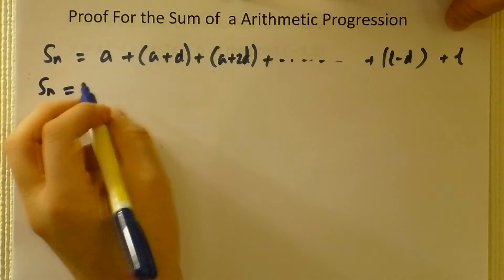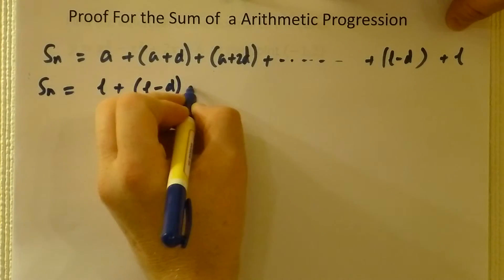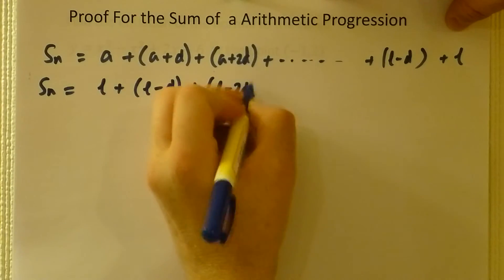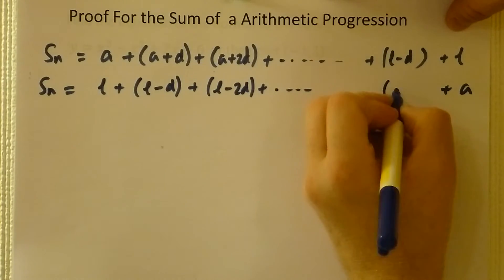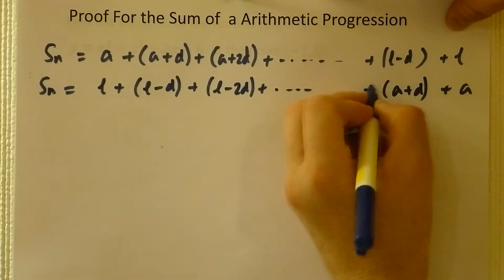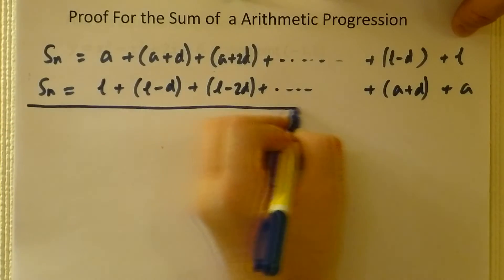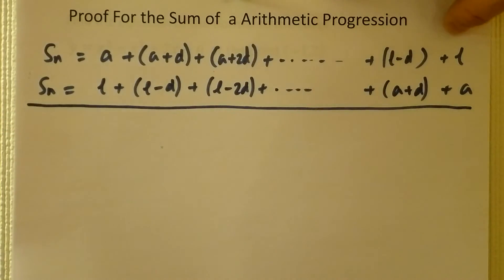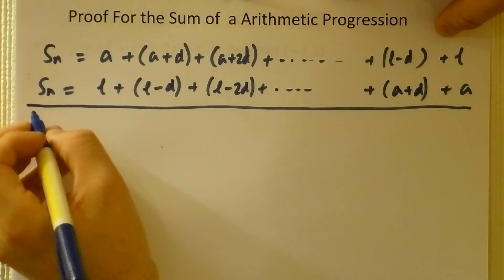So if I just write the sum the other way around: the last term, the last term minus d, the last term minus 2d, etc., all the way down to the first term a, a plus d, a plus 2d, etc., then that is exactly the same sum - i.e., 1 plus 2 plus 3 is the same as 3 plus 2 plus 1.